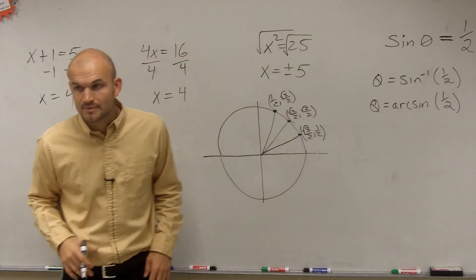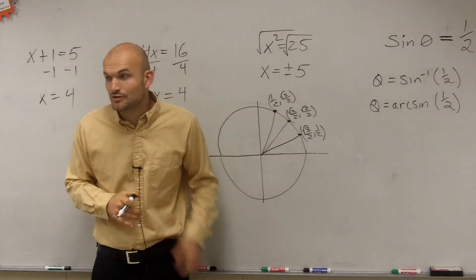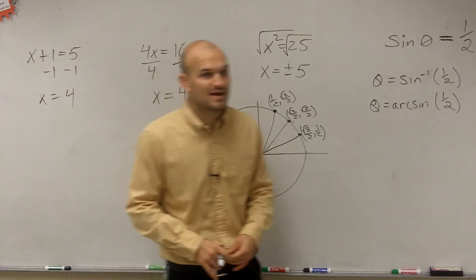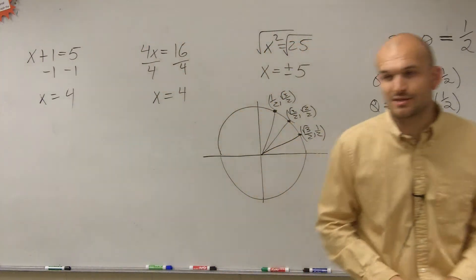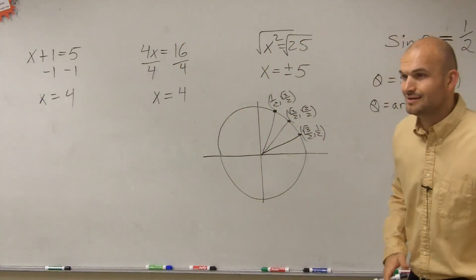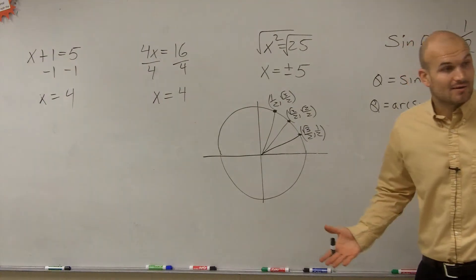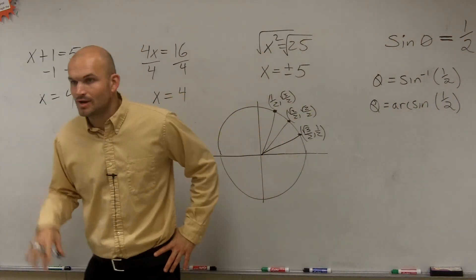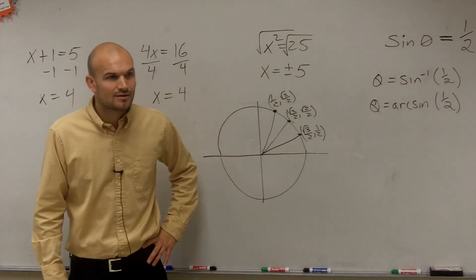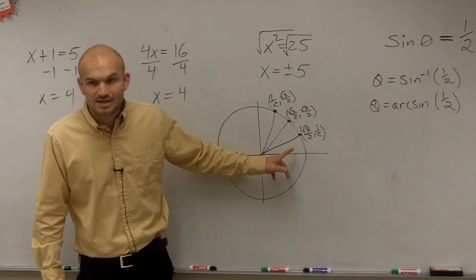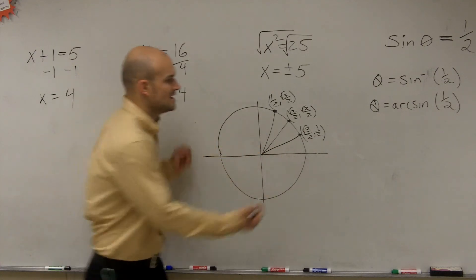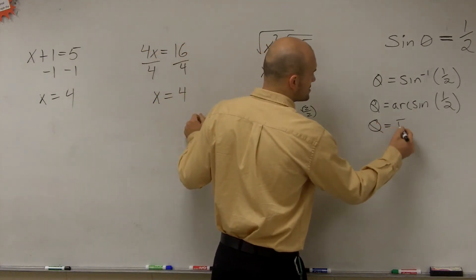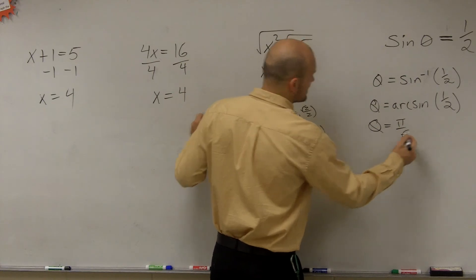Now remember, what does the sine value represent? The sine value represents the y-coordinate of the point on the unit circle. So out of these three points, which angle gives us a y-value of 1/2? That's pi over 6. So you could say that theta equals pi over 6.